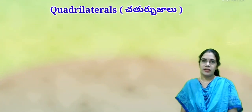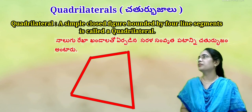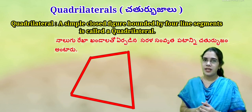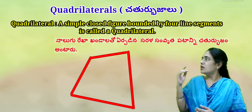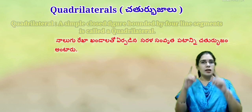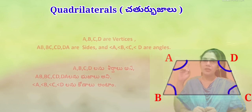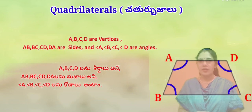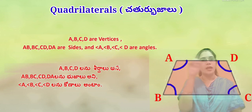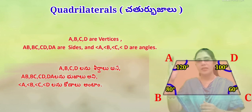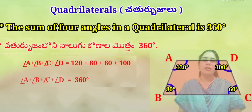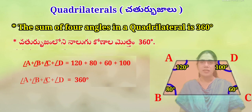Now coming to quadrilaterals (Chatur Bhujam). A simple closed figure bounded by four line segments is called a quadrilateral. In this figure, A, B, C, D are the vertices; AB, BC, CD, and DA are the sides (Bujalu); and Angle A, Angle B, Angle C, and Angle D are the angles (Konalu). The sum of the four angles in a quadrilateral is 360 degrees.